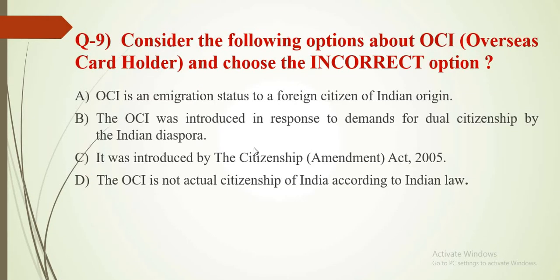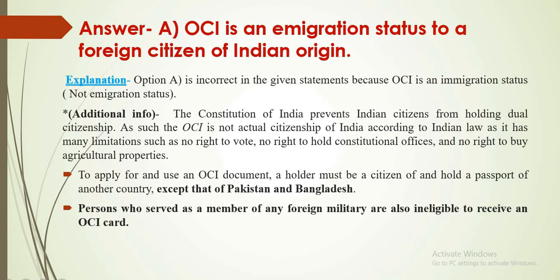Question number 9 is again related to OCI (Overseas Citizenship of India) card holders, and you have to choose the incorrect option. Statements B, C, and D are all correct; statement A is incorrect. So the answer is A. Statement A is incorrect because OCI is an immigration status. To apply for and hold an OCI document, a holder must be a citizen of and hold the passport of another country except Pakistan and Bangladesh. Persons who have served as a member of any foreign military are also not eligible to receive an OCI.